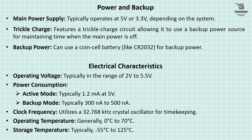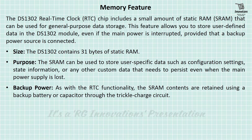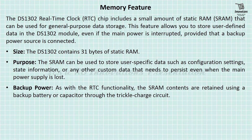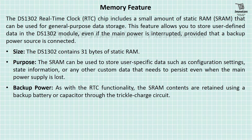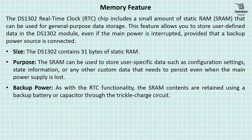The clock frequency utilizes a 32.768 kHz crystal oscillator for timekeeping. Operating temperature is generally 0°C to 70°C, and storage temperature is typically -55°C to 125°C. Memory feature: the DS1302 includes 31 bytes of static RAM for general-purpose data storage, allowing you to store user-defined data even when main power is interrupted, provided a backup power source is connected. The SRAM can store configuration settings, state information, or any custom data, and its contents are retained using a backup battery through the trickle charge circuit.